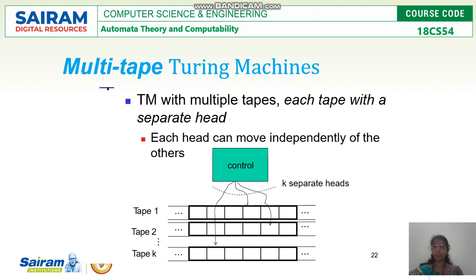This multi-tape Turing machine is also equivalent to my standard Turing machine — a Turing machine with a single tape, read-write head, and a control unit. In terms of speed, multi-tape Turing machine may be a little faster, but whatever task the multi-tape Turing machine can do, the basic or standard Turing machine can also do. That's why both are equivalent.